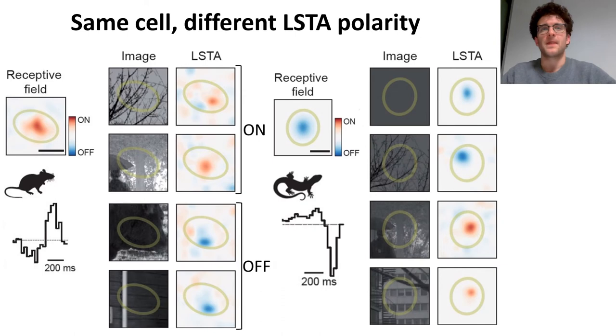We found the same result also in axolotl cells and here I show an example of an OFF cell. So, what is going on? Can we make sense of this and find a relationship between the natural images and the polarity of their local STAs?